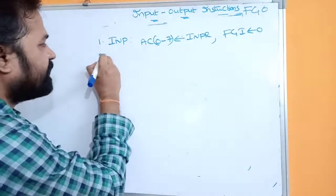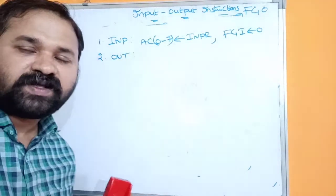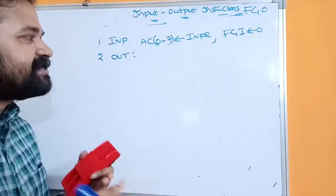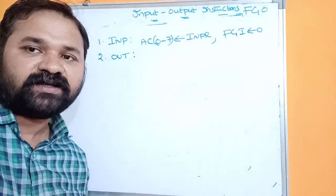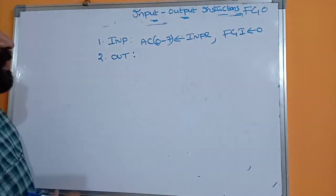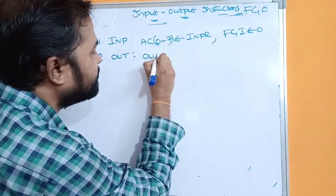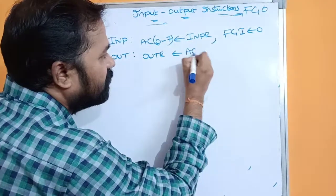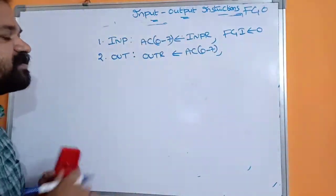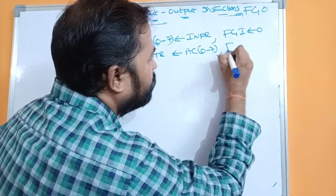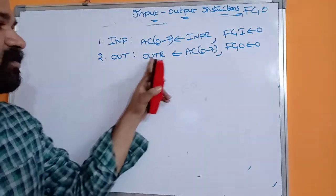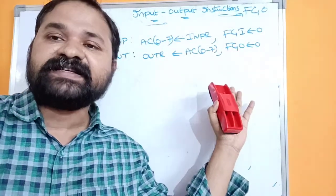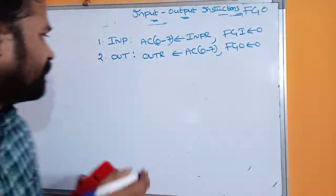The next instruction is OUT — OUT stands for Output. The output register gets a character from the accumulator. Since the output register is 8 bits, the most significant 8 bits of the accumulator are transferred to the output register. After this transfer, FGO is set to 0 because the output register now contains data — FGO is 0 when output register contains data, and 1 when it does not.